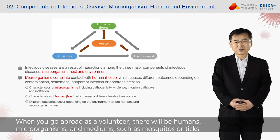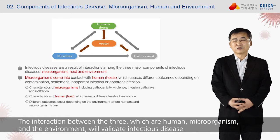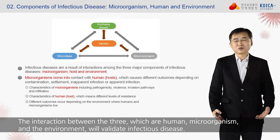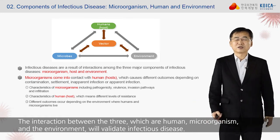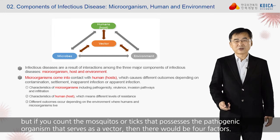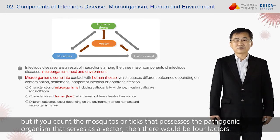When you go abroad as a volunteer, there will be humans, microorganisms, and mediums such as mosquitoes or ticks. The interaction between the three — human, microorganisms, and the environment — will establish infectious disease. We call these the three factors of infectious disease, but if you count mosquitoes or ticks that possess the pathogenic organism and serve as a vector, then there would be four factors.